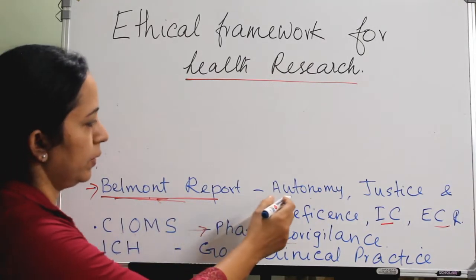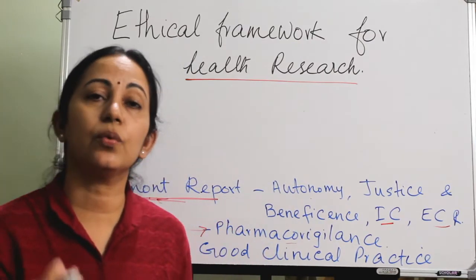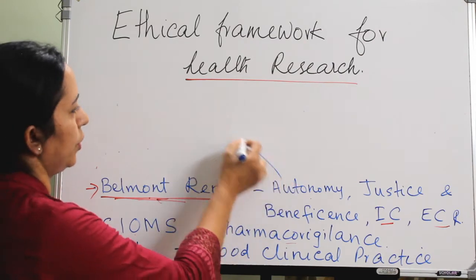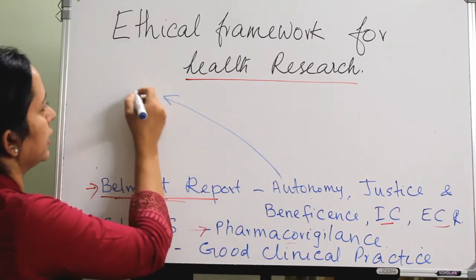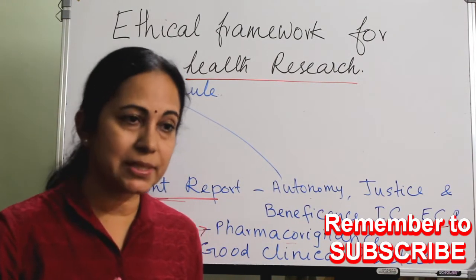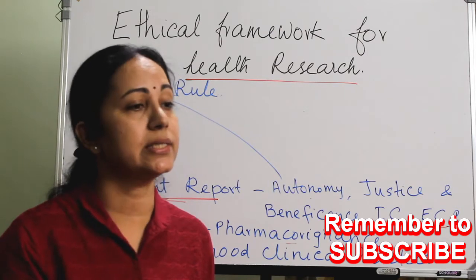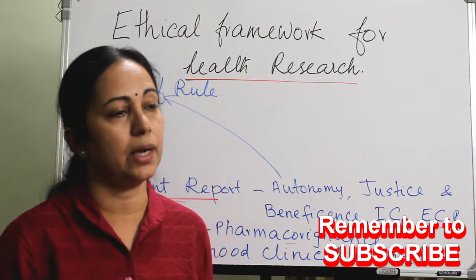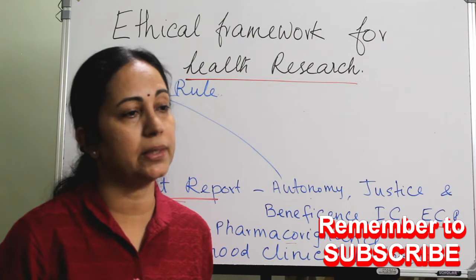The basic ethical principles a researcher should follow are Autonomy, Justice, Beneficence, and Non-maleficence. Autonomy is a Latin word meaning self-rule. Every researcher has an obligation to respect the decision taken by an adult participant — respecting the self-dignity of the participant. Autonomy means we should respect the dignity of the adult participant and should not force them to take part in the study.